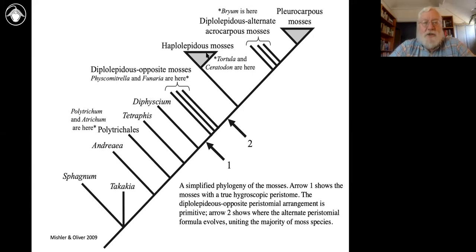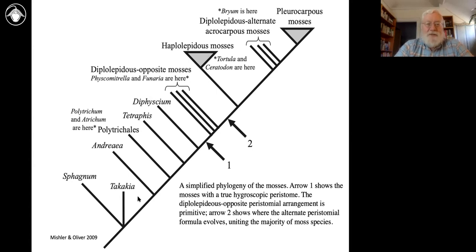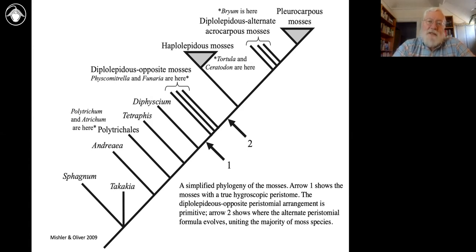That gives you a picture of the moss phylogeny — where some traits arise and where there's active evolutionary activity. A lot of diversification is exactly where the taxonomic problems are, because it's much easier to identify something with no close relatives than a group with many very close relatives. There is a pretty good phylogeny — this is barely an outline, but we have good phylogenies. I work almost exclusively in the haplolepidous group, and we have a really good phylogeny for that, with thousands of branches in it.